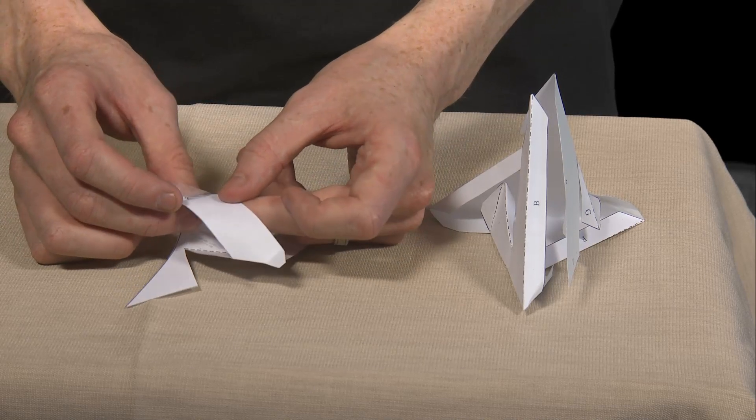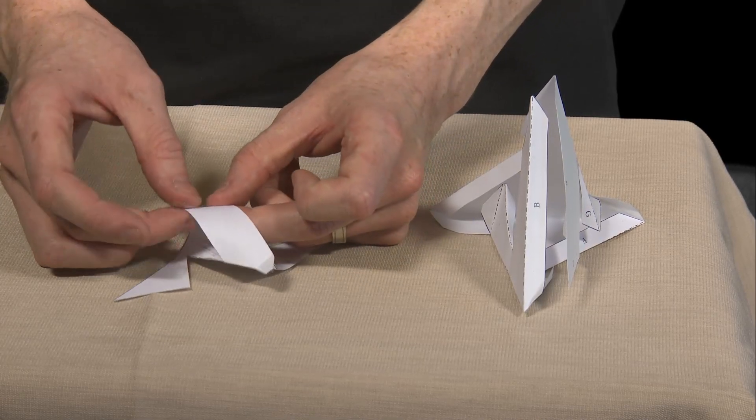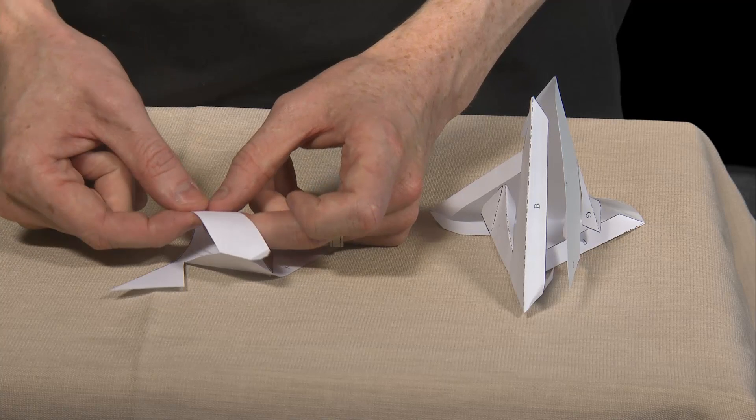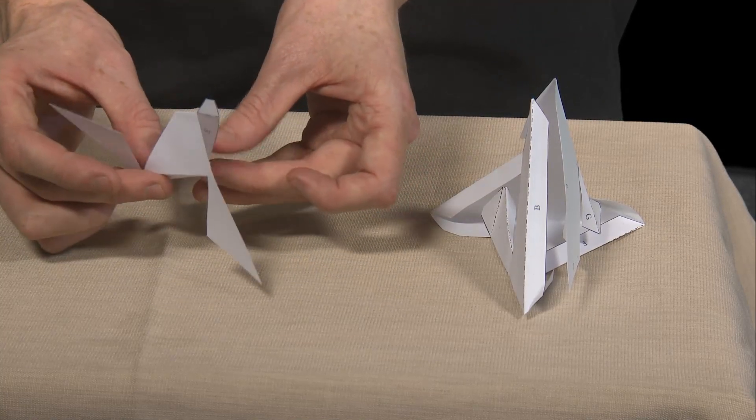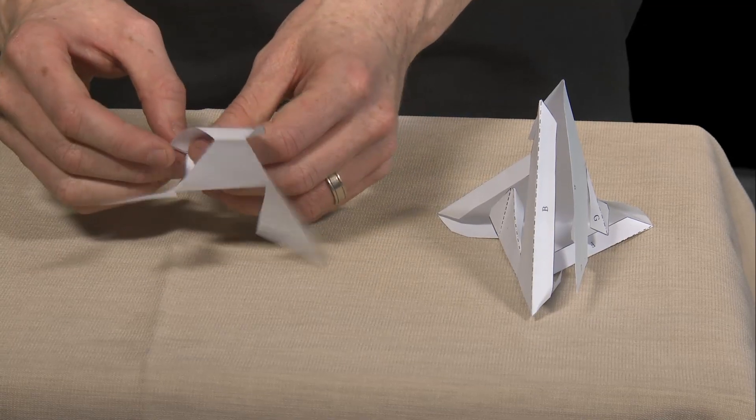So we're currently folding over the A tab to meet the A side, and then just taping that in place. So once we've got that, this is the middle part of our Szilassi polyhedron.